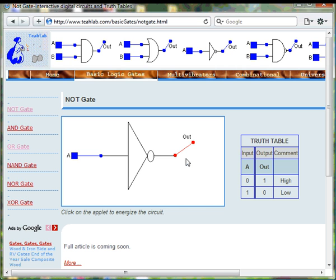As you can see from the truth table, the output of the NOT gate is always the opposite of the input.